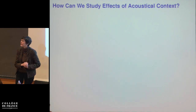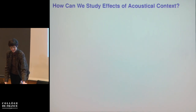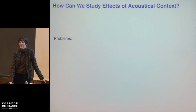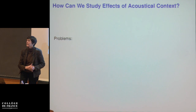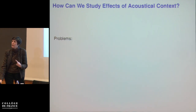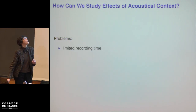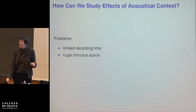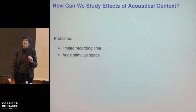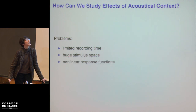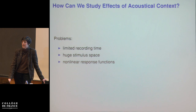When you think about it, it's actually a very hard problem to address experimentally, because we don't have infinite recording time. If we're recording from a neuron in the auditory cortex and trying to figure out how the context in which a sound occurs influences it, we have a problem: recording time is limited and the possible number of different acoustical contexts is huge. This is further complicated by the fact that cortical neurons — indeed neurons throughout the auditory system — are nonlinear, with nonlinear response functions.